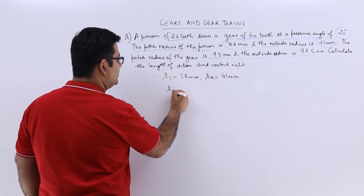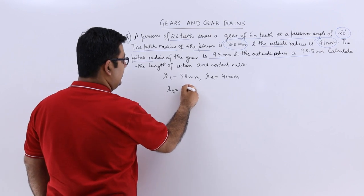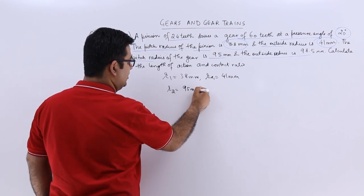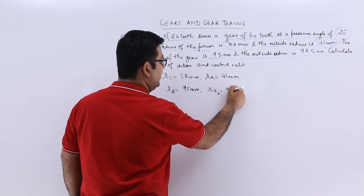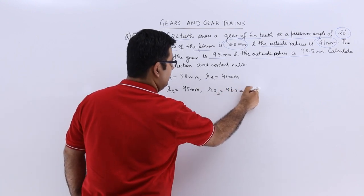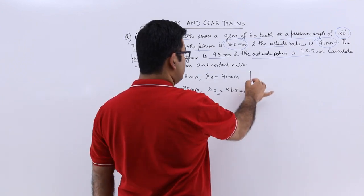The pitch radius R2 is 95 for the gear and the addendum radius is 98.5 mm. The pressure angle is 20 degrees.